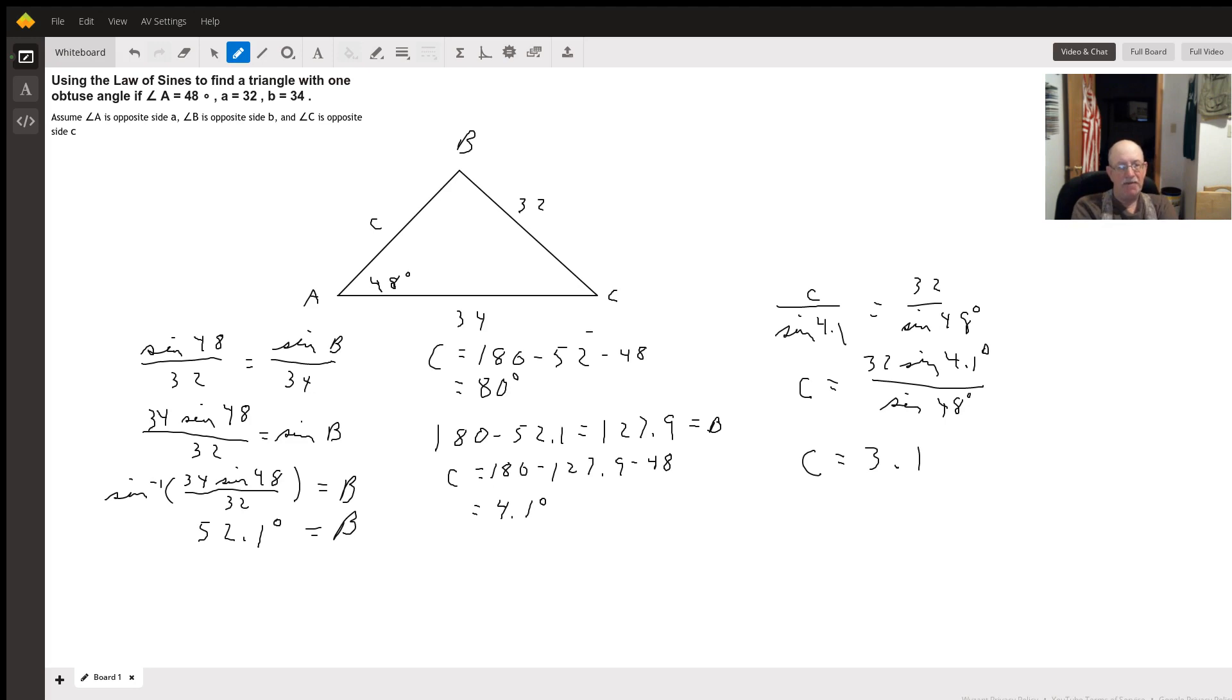So the first time I did the law of sines with side A and angle A and side B and angle B, I got B was 52.1. When I plug that in to figure out C, I get C is 80 degrees.